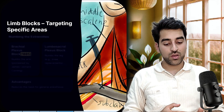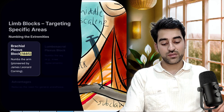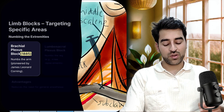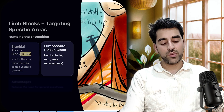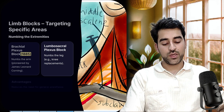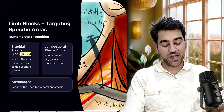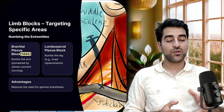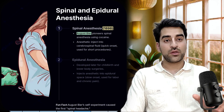Another technique is the limb block, also known as plexus block — for example, the brachial plexus block, pioneered by James Leonard Corning in 1885. It is used to numb the arm; for the leg, we use the lumbosacral plexus block. The advantage was that for minor surgery, we no longer needed to put the patient fully to sleep.